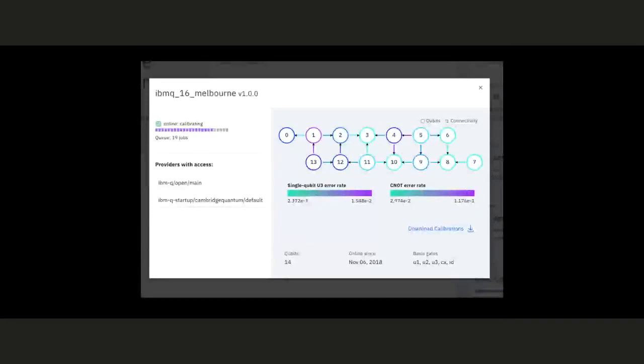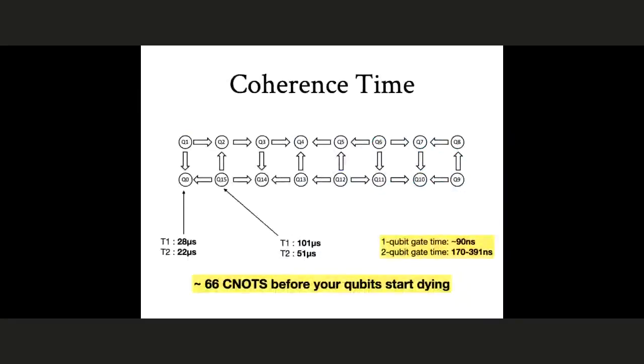One other thing to note about these kinds of machines is that this is not stable. The error rates will change over time. And so in the case of IBM, I think they recalibrate their machines every 12 hours and update this information. And so in terms of our compiler, we want to be able to use this information where we can. But the perhaps most pressing thing is to realize that we have a really hard limit with these kinds of machines of what can be achieved within acceptable noise.